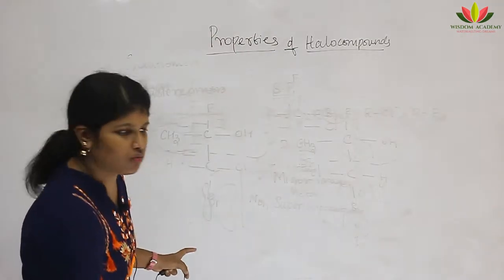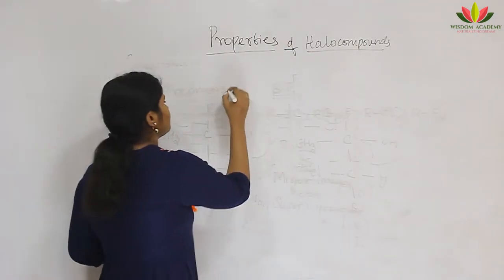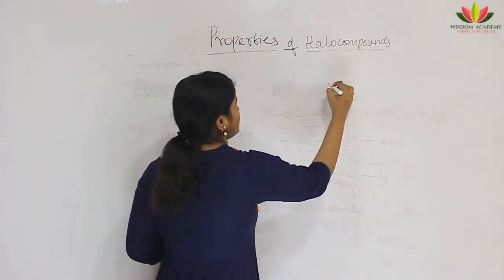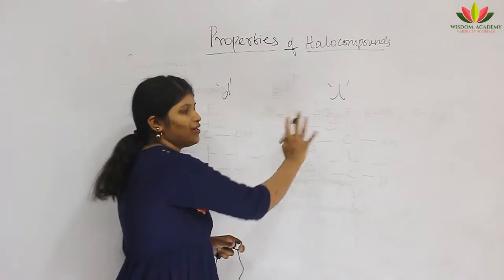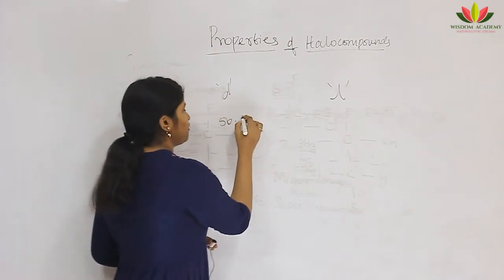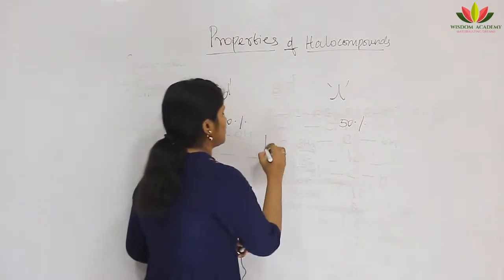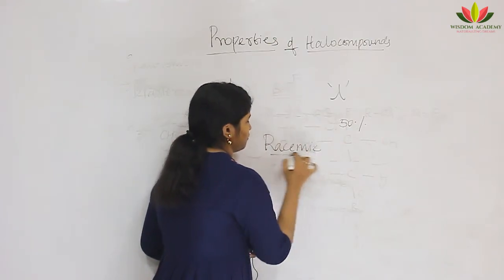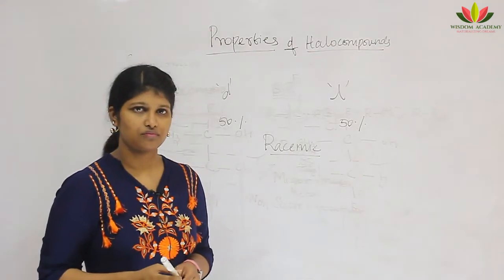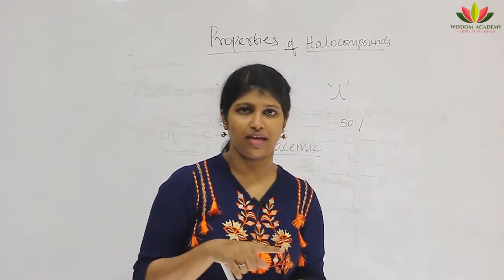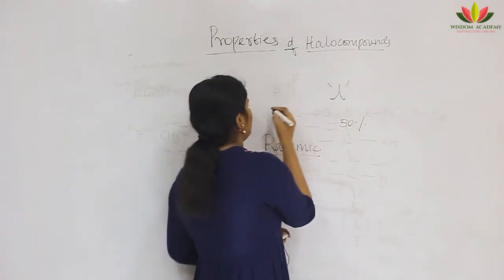There are two isomers: D-isomer and L-isomer. If both isomers are present in equal composition — 50% and 50% — the mixture is called a racemic mixture, and the process of preparing this racemic mixture is called racemization. D stands for dextrorotatory and L stands for levorotatory.